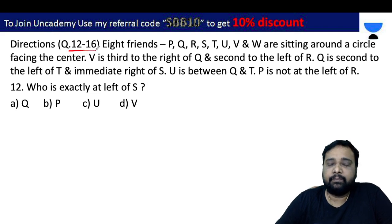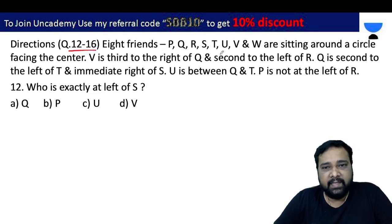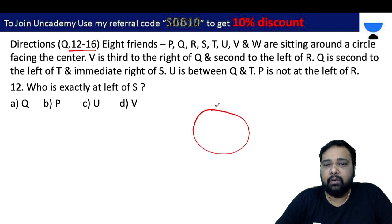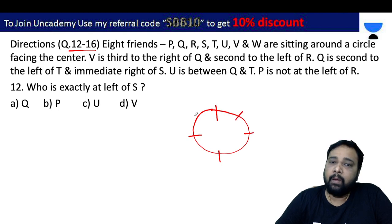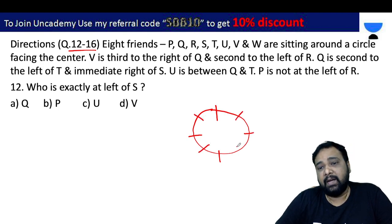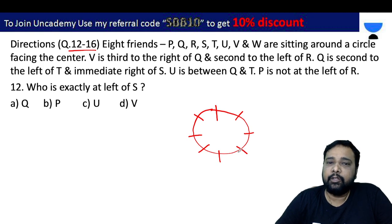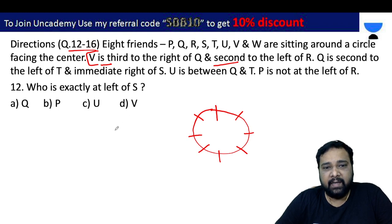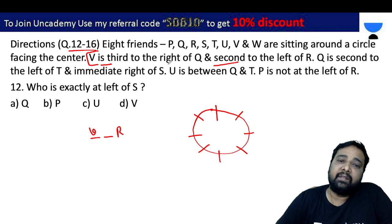Problems 12 to 16. Eight friends are sitting around a circle facing the center. V is the third to the right of Q, and second to the left of R — meaning R is at the second position to V's left.